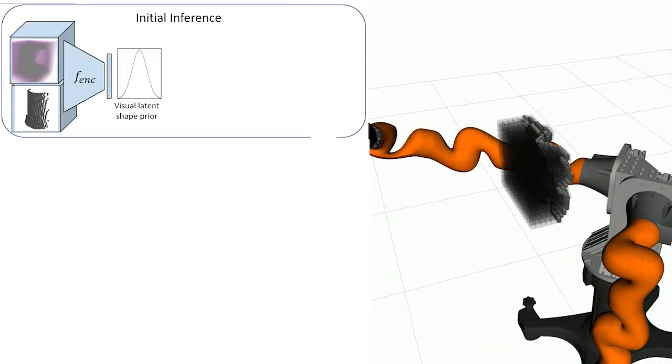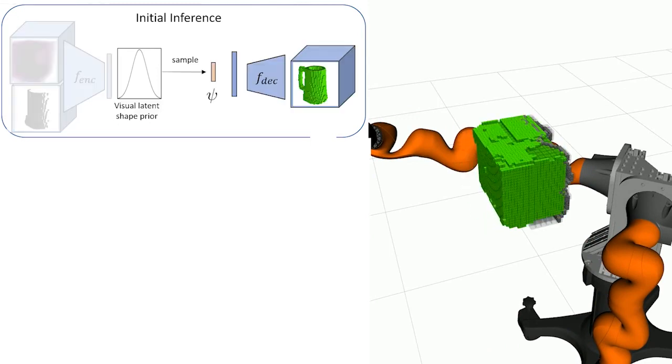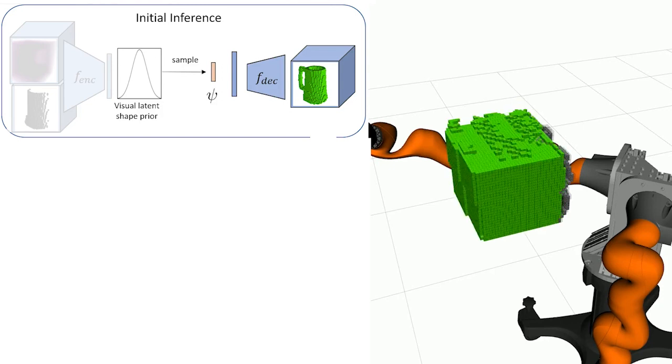The visible points are fed to the encoder of a shape completion network trained on boxes. This generates a prior over latent shapes. Sampling from this prior generates diverse, feasible shapes.